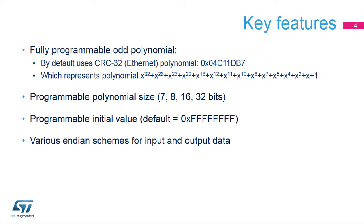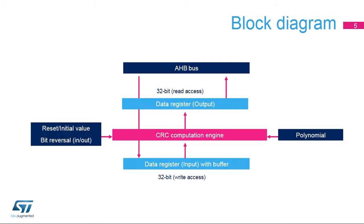The peripheral can be configured to support the big or little endian formats of the input and output data, supporting various communication protocols. The CRC calculation unit is connected to the AHB bus interface for optimal performance.